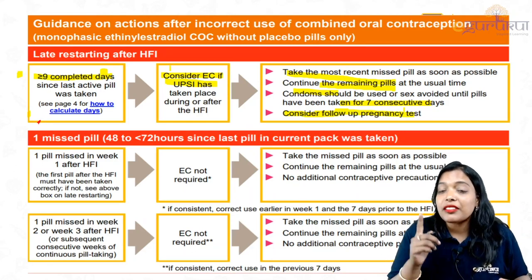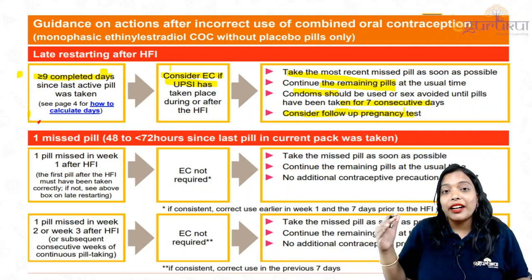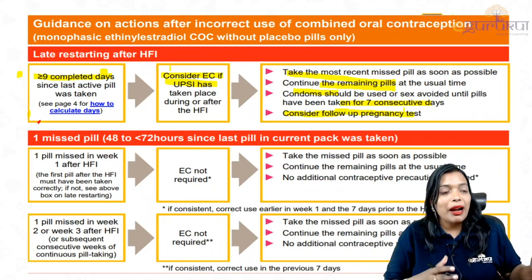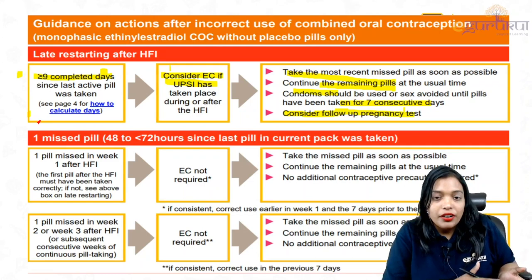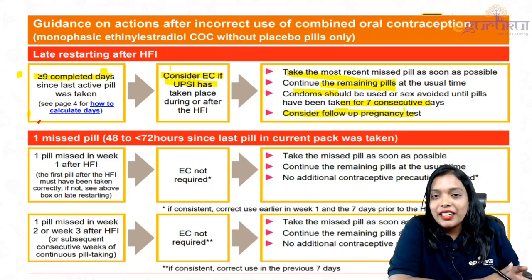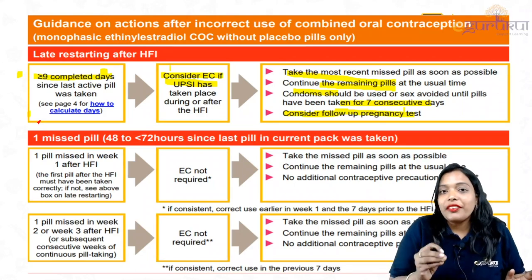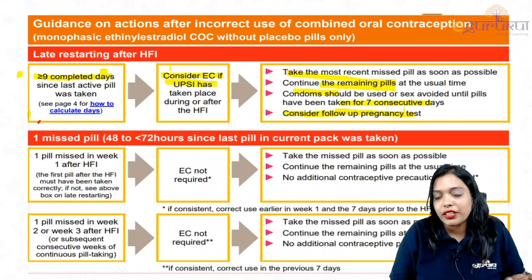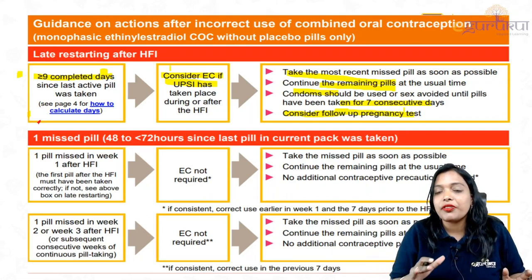So if you start the pills late — either after day 5 of the menstrual cycle or after day 9 of the hormone-free interval — ideally you have to complete the pack up to 28 days. If the pack is over, on the 29th day you should start the pill. But if she didn't start by the 30th day, and there is a chance of pregnancy from unprotected intercourse, you have to take emergency contraception. For the pills to become effective, use a condom or additional contraception for the next 7 days.